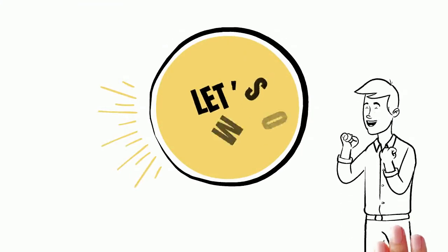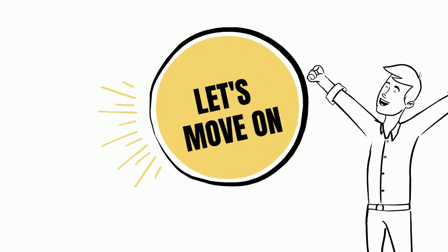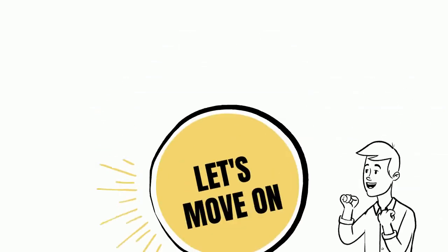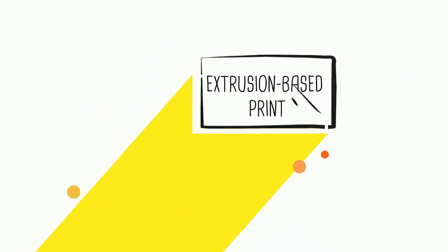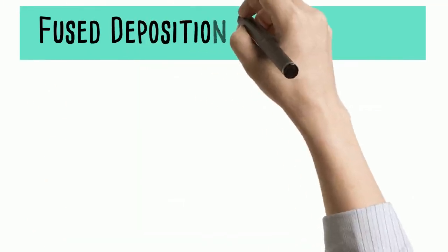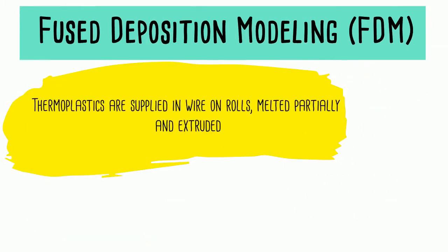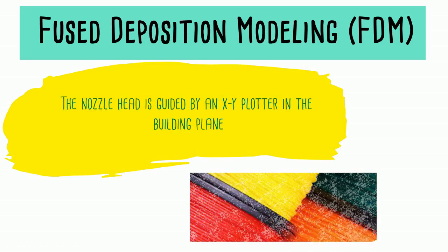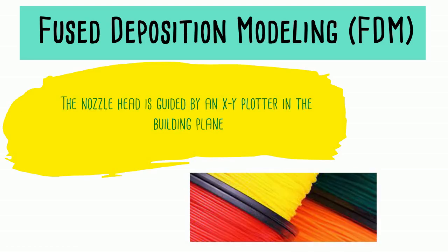Last but not least, let's move on to the extrusion based print technology: fused deposition modeling. Thermoplastics are supplied in wire on rolls, melted partially, and extruded. The nozzle head is guided by an XY plotter in the building plane.